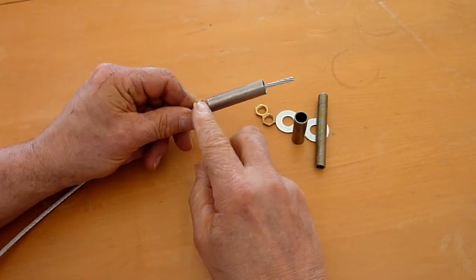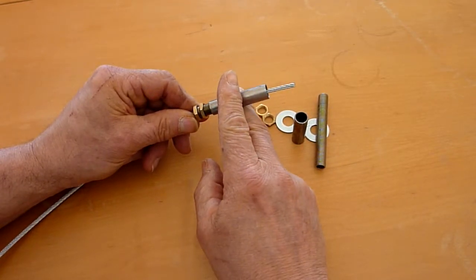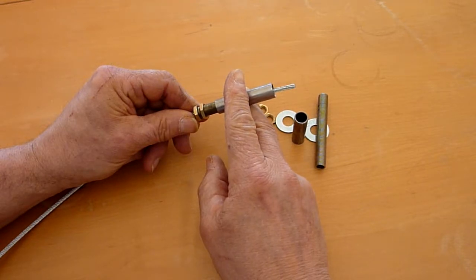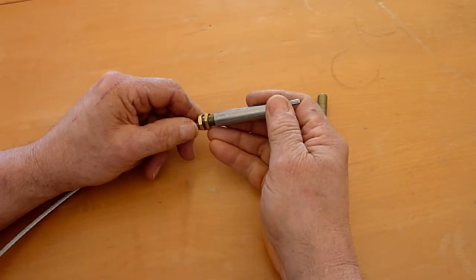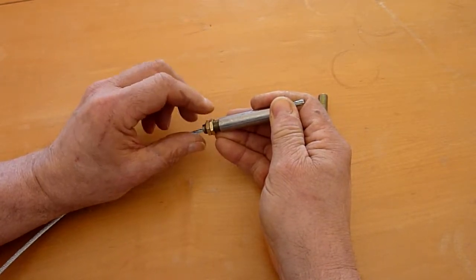By tightening this nut, which of course will move this piece in that direction, and then of course you would want to have a second nut to lock the first one.